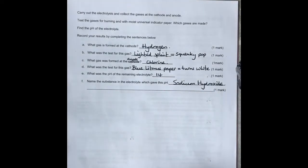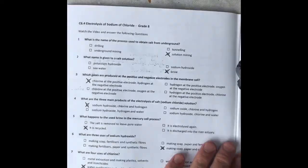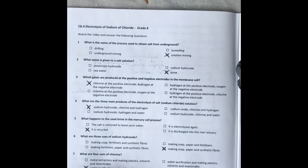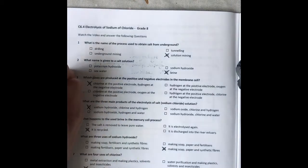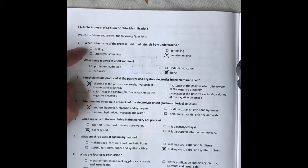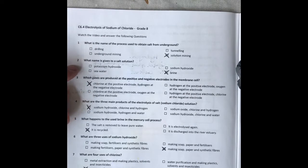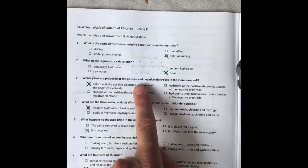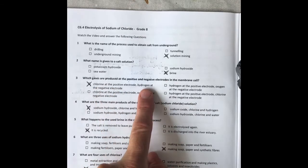Now for those on the higher booklet, you were asked to watch a video about the electrolysis of sodium chloride or brine. Question one: the answer is solution mining. Two is brine. Three: the gases are produced at the positive and negative electrodes - the membrane cell is chlorine and hydrogen.